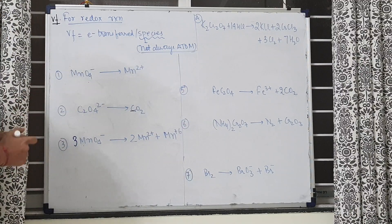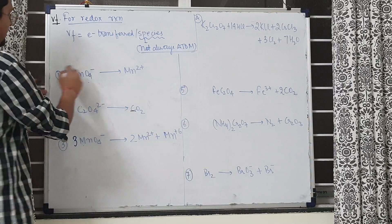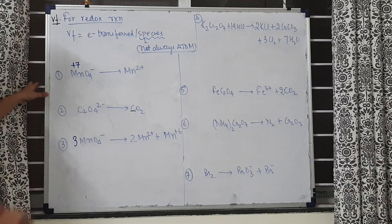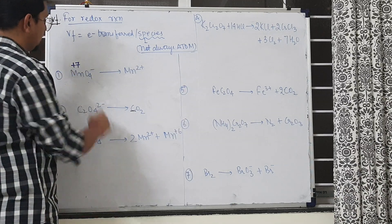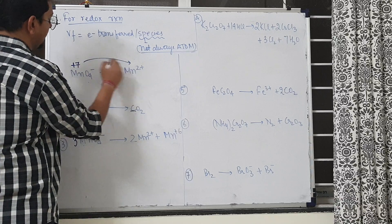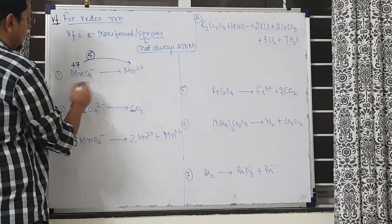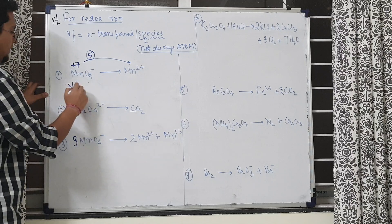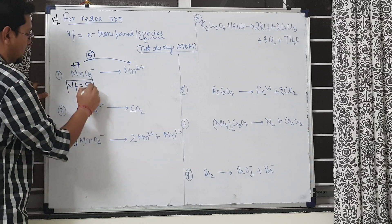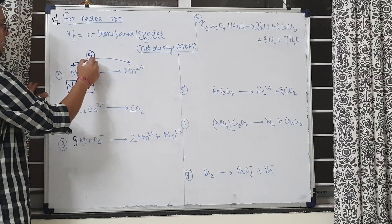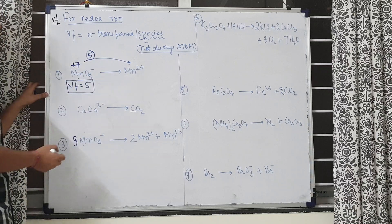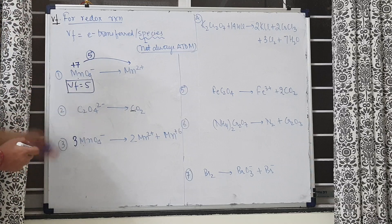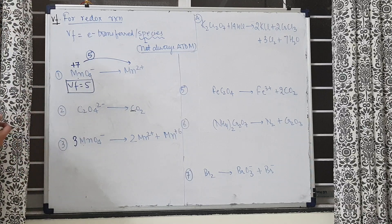Let's start with example 1 — as simple as that. Manganese has an oxidation state of +7, which goes to +2. The change is 5, and no other oxidation state change is occurring. So the valency factor comes out as 5, because 5 electrons are transferred per one MnO₄⁻. Electron transferred per MnO₄⁻ is 5 — that's your valency factor. Easiest.